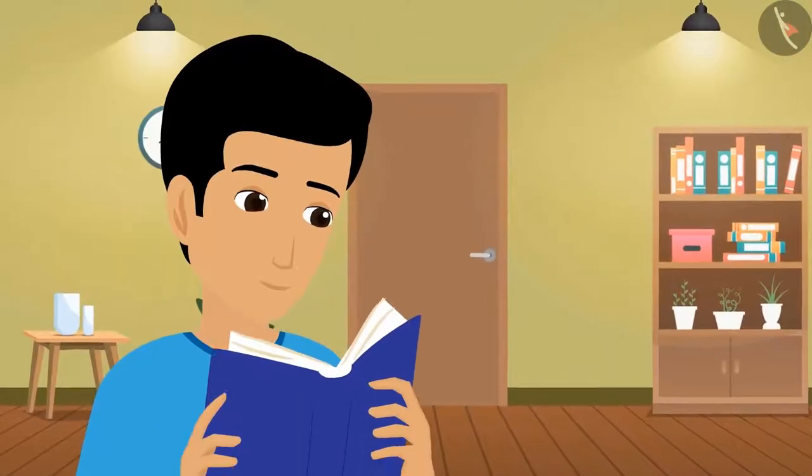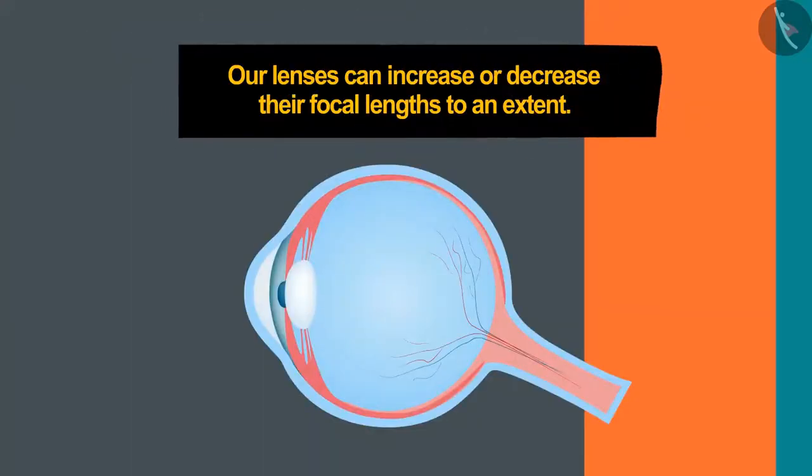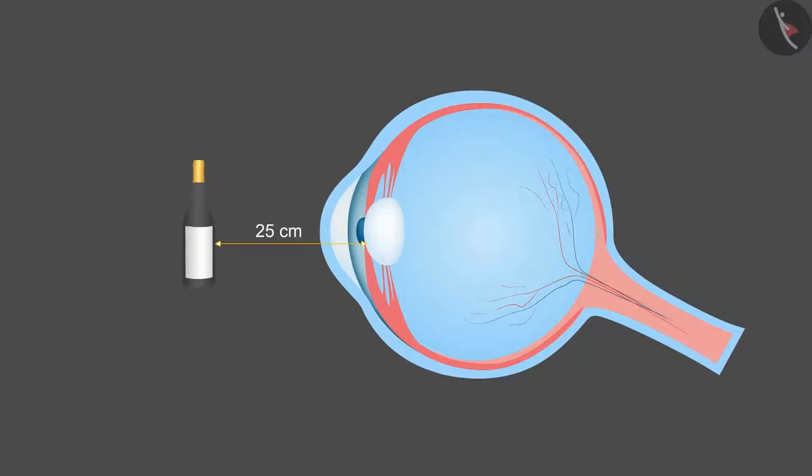You must have noticed that you can't read while keeping a book very close to your eyes. Why is it so? Because our lenses can increase or decrease their focal lengths to an extent. For a normal eye, this distance is 25 centimeters, which is called the near point.